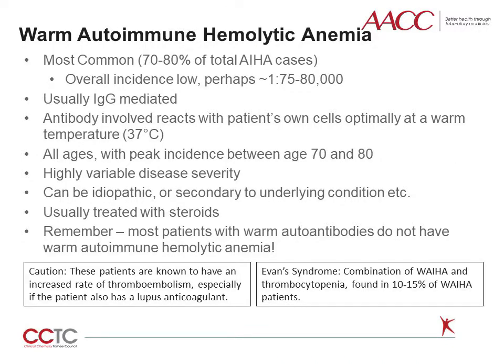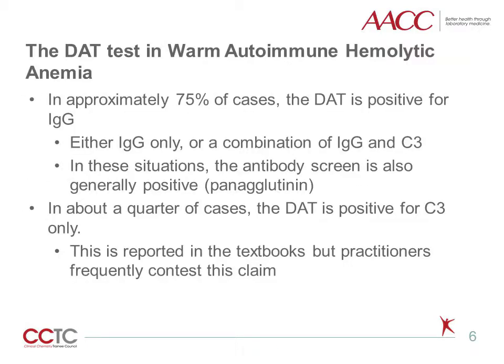Warm autoimmune hemolytic anemia is the most common type of immune hemolysis, but the overall incidence is still quite low. It is generally mediated by IgG-class antibodies, which optimally react with the patient's own red blood cells at body temperature. While all ages and sexes can be affected, the most common clinical scenario is an older patient with an underlying hematological disorder such as lymphoma. Many of these patients do quite well with steroids and treatment of the underlying condition. They are believed to be 5 to 10 times more likely to have a thrombotic event compared to the average population. In addition, these patients sometimes have thrombocytopenia associated with their hemolytic anemia — a phenomenon known as Evans syndrome.